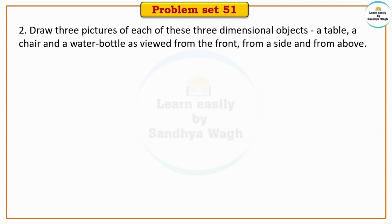Question two: Draw three pictures of each of these three dimensional objects - a table, a chair, and a water bottle - as viewed from the front, from a side, and from above.